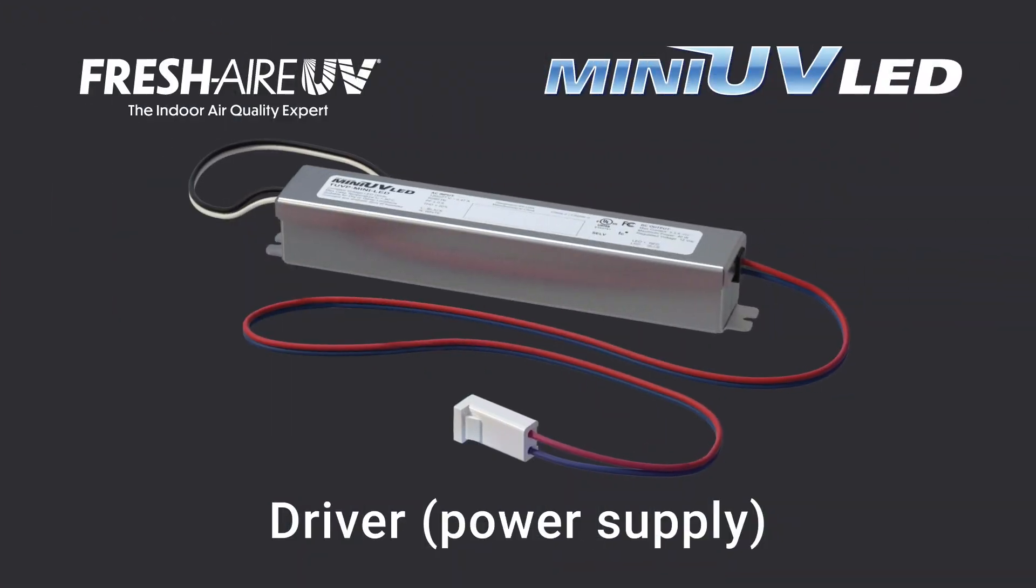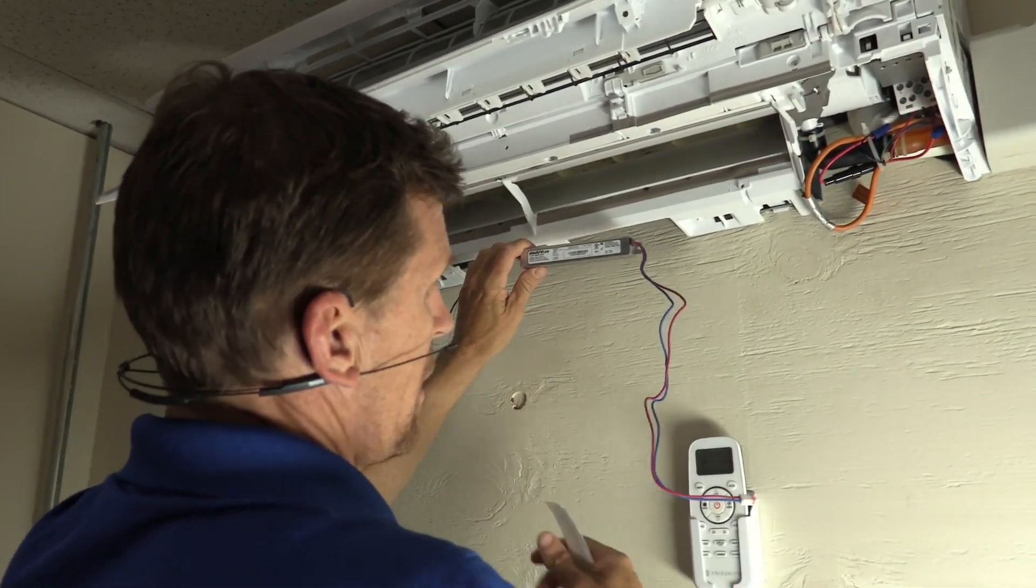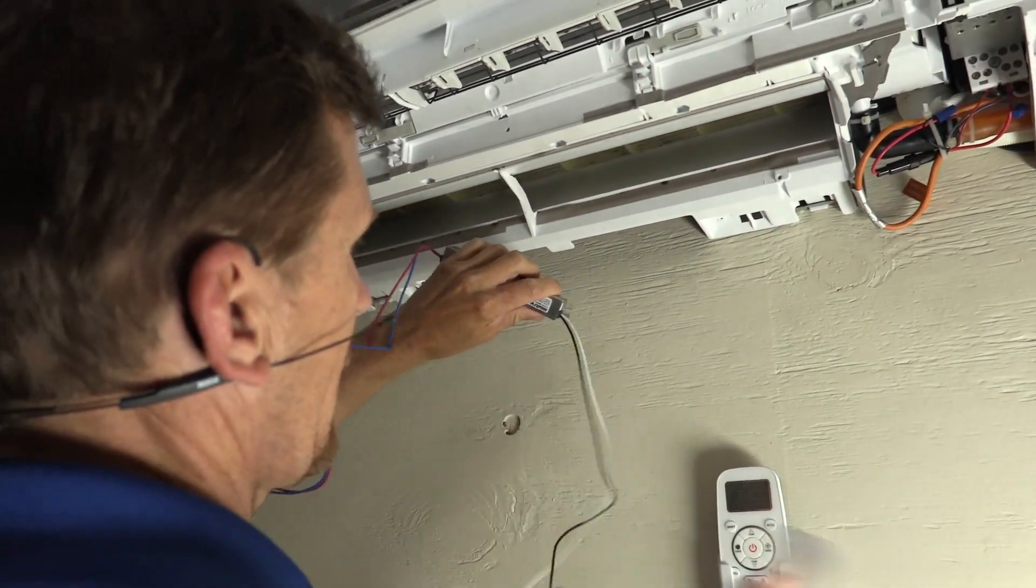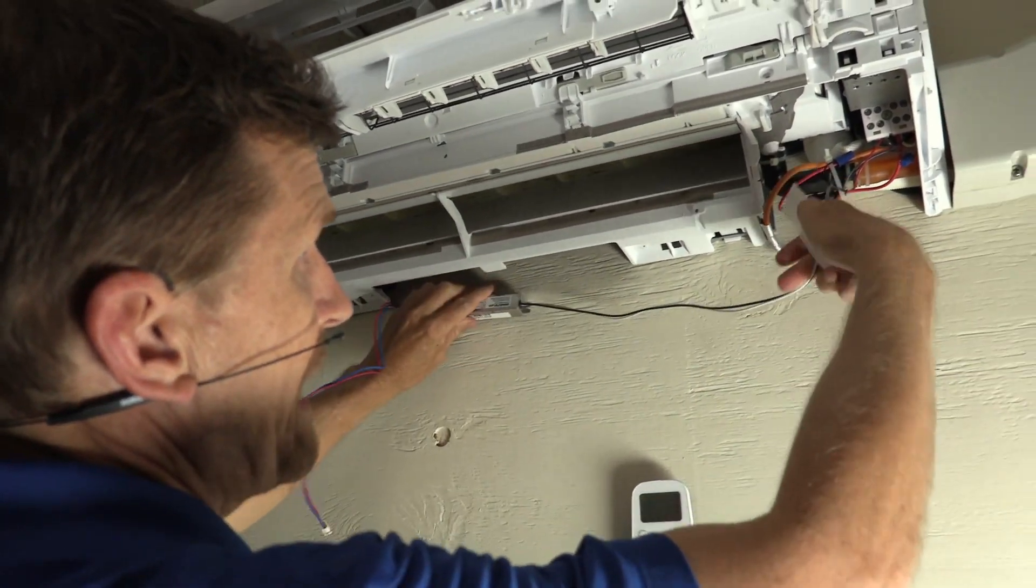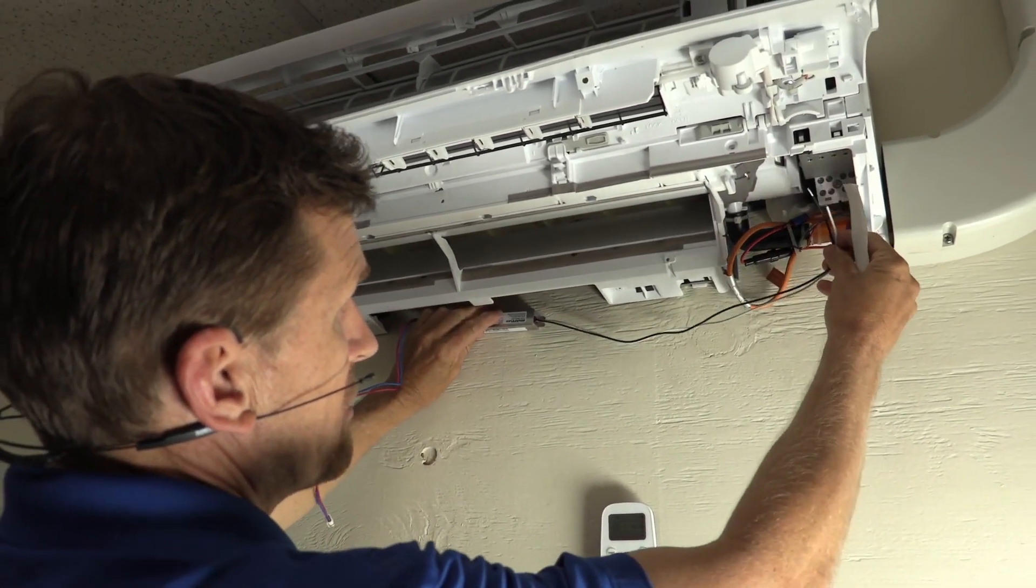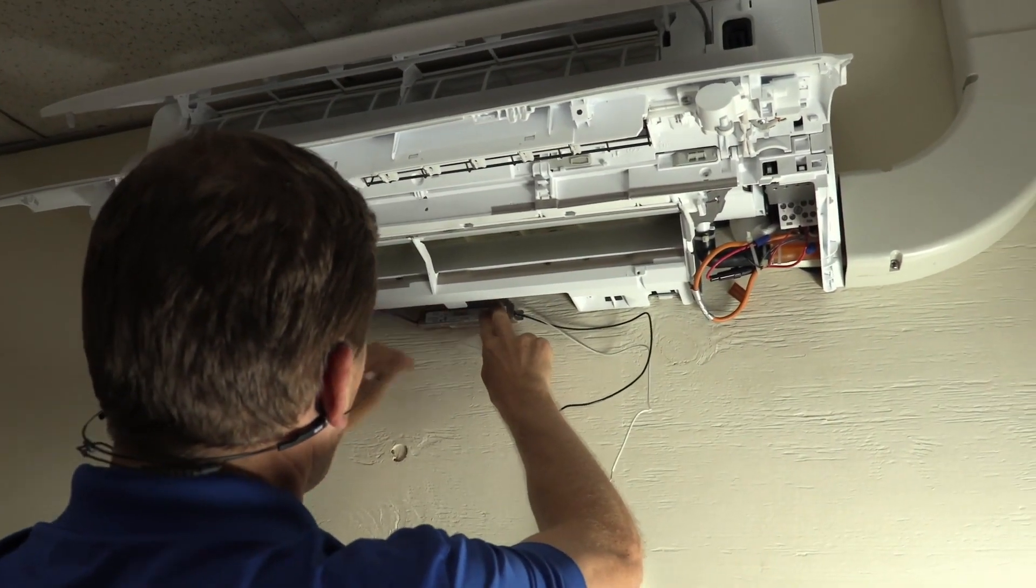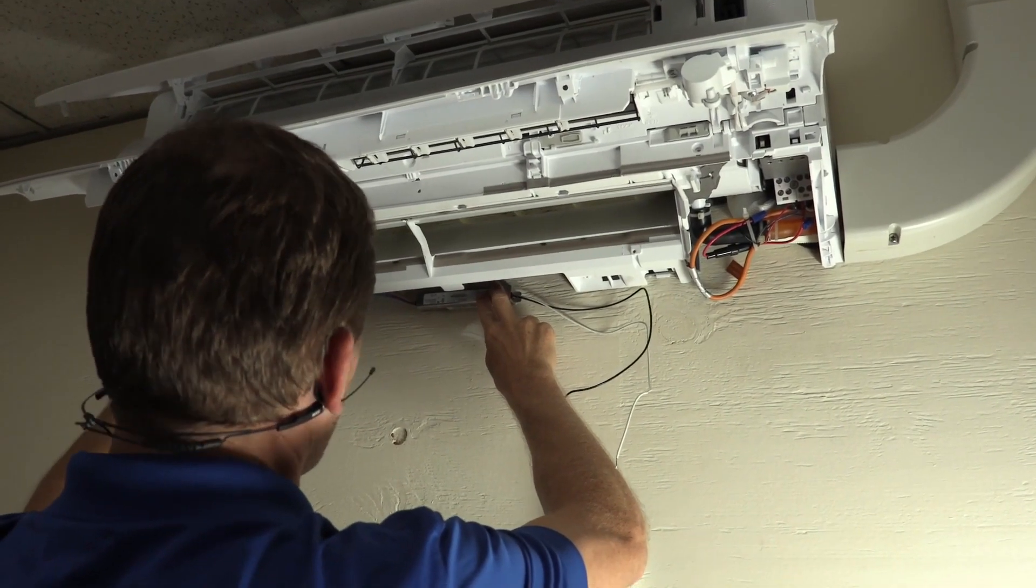When you're installing the driver, you actually want to first find the best location for it. In this particular model, you want to make sure that your leads are going directly to your control board, that you actually have enough wire to go directly to where you're going to be making your connection, and also that you're going to have enough wire to connect to the strip.